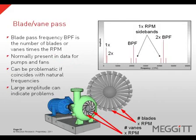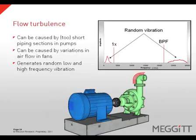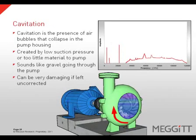Blade or vane pass frequency is the number of blades or vanes times the RPM of the machine. This frequency is normally present in data for pumps and fans and can be problematic if it coincides with natural frequencies of the system. Large amplitudes of these frequencies can indicate a problem. Flow turbulence can occur in both pumps and fans — with pumps, turbulence can be created by piping sections that are too short; with fans, it can be caused by variations in airflow. Flow turbulence generates random low and high-frequency vibrations. Cavitation is the presence of air bubbles that collapse in the pump housing, created by low suction pressure or too little material to the pump. It sounds like gravel going through the pump and can be very damaging if left uncorrected.